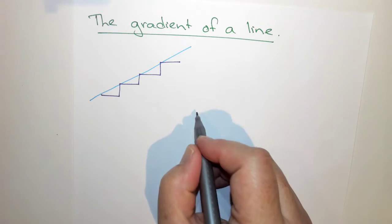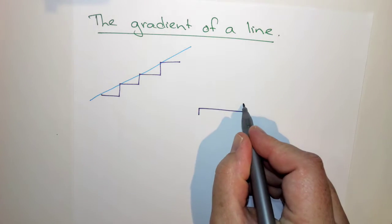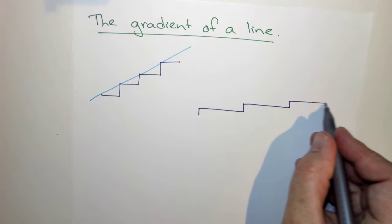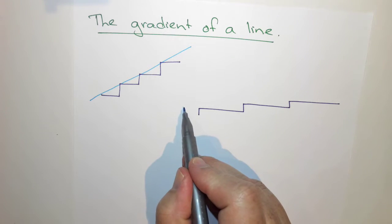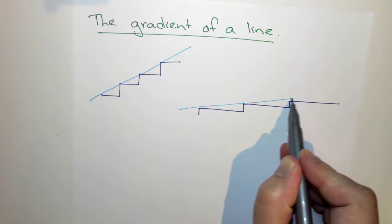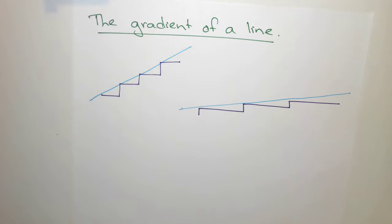Some stairs though, you can have very long shallow steps. And in that case, the gradient of this line, that's nowhere near as steep. That's quite a shallow slope.